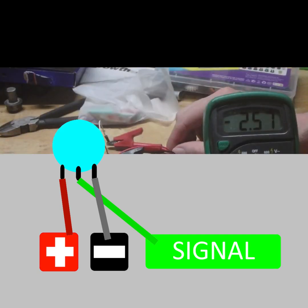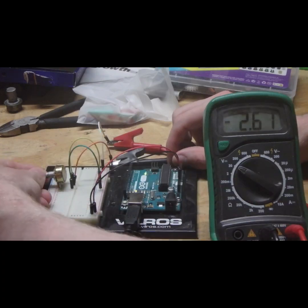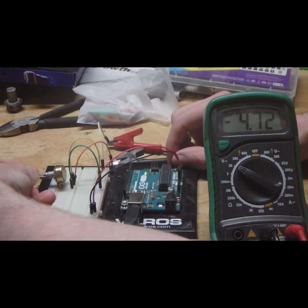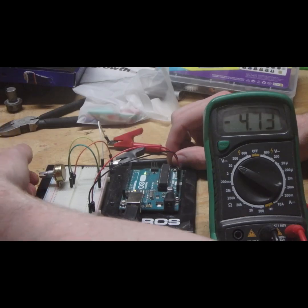So we're getting about 2.5 volts out there, and then we twist it, we're getting less all the way to zero. Twist it and we're getting all the way to the 5 volts.